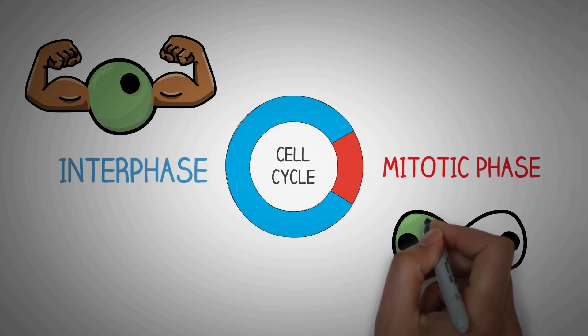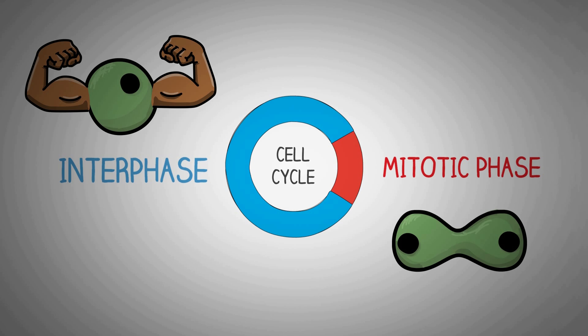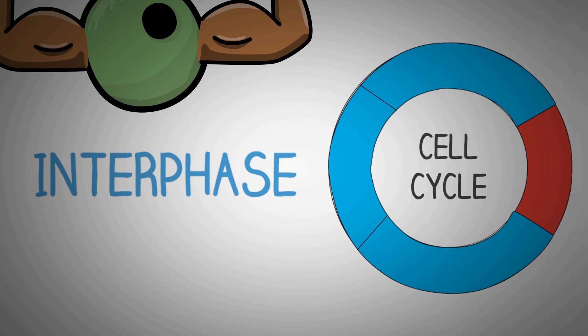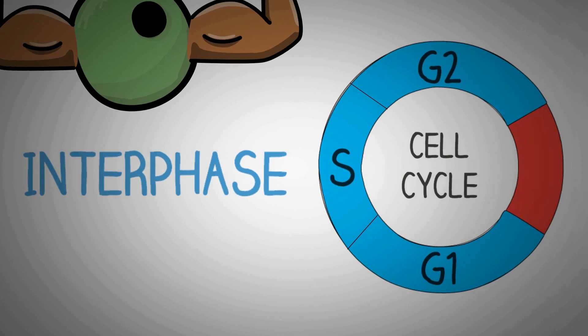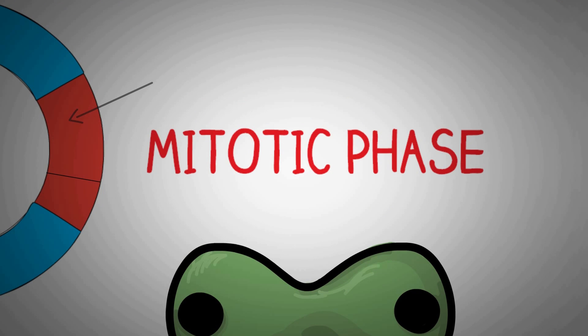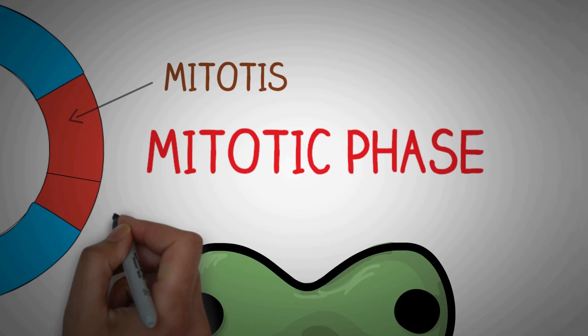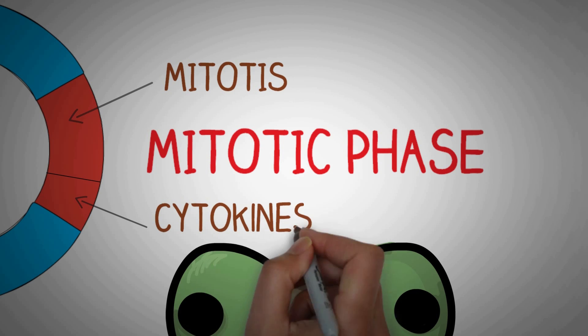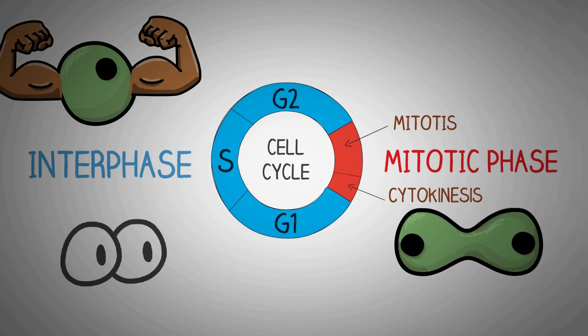Now of course things in our body cannot be so simple. So these two phases are further divided into many phases. The interphase is divided into three phases: G1, S and G2 phase. And the M phase is divided into two known as the mitosis, also known as karyokinesis and the second phase the cytokinesis. As we go deep into this topic, you will understand these terms and their meaning in detail.